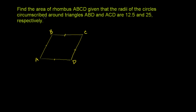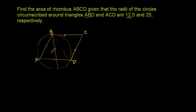They say the radii of the circle circumscribed about triangle ABD. So triangle ABD — let's draw its circumscribed circle, the circle that passes through vertices A, B, and D. There we go. That's its circumscribed circle about ABD. They're telling us that its radius is 12.5.